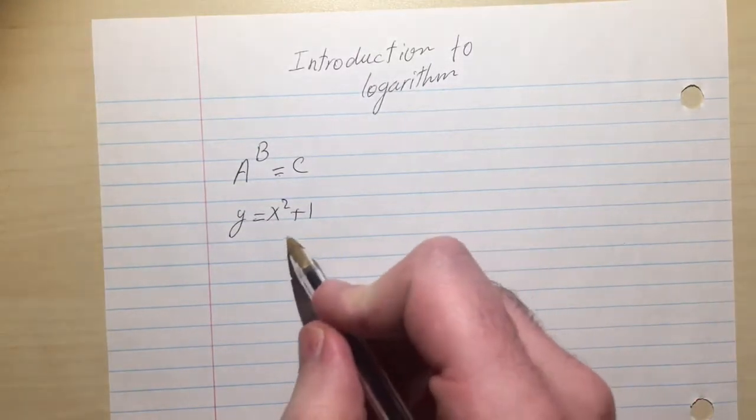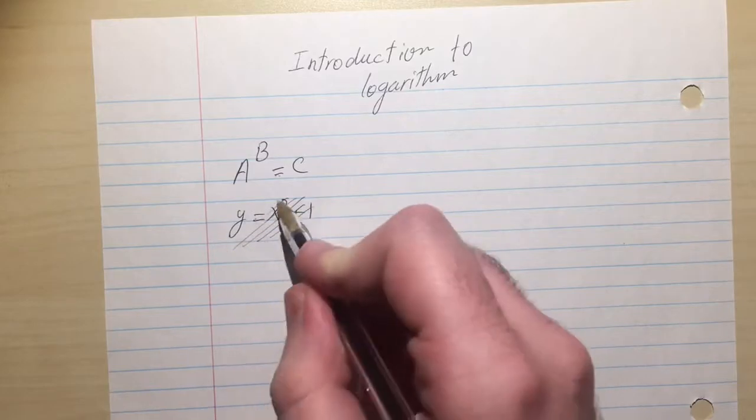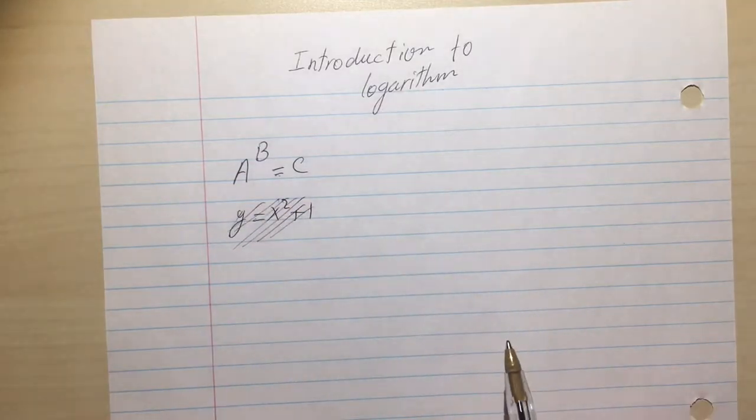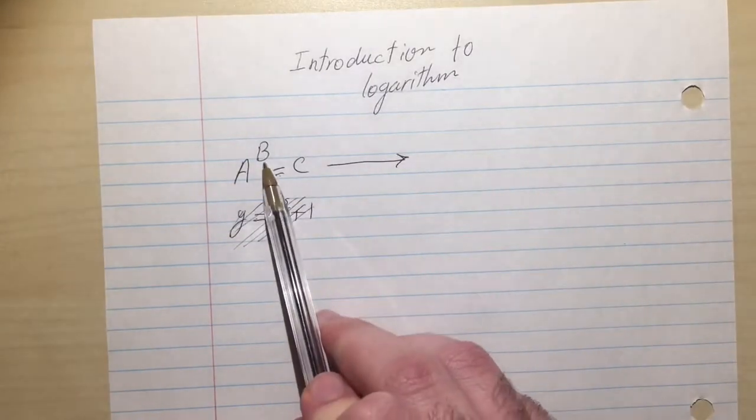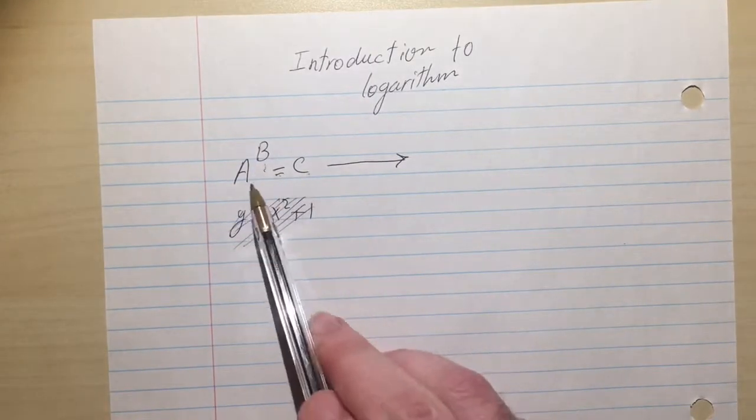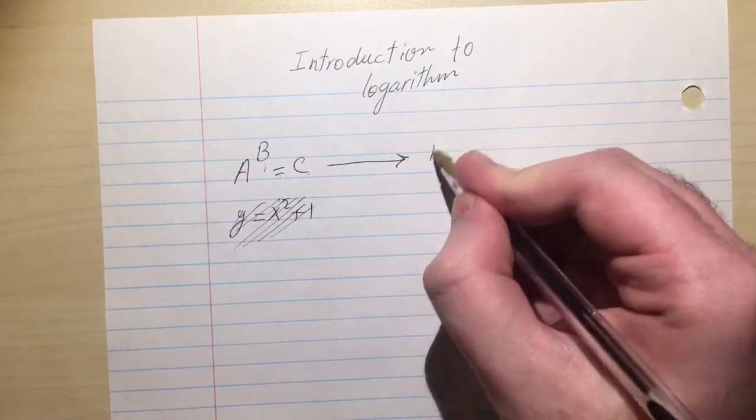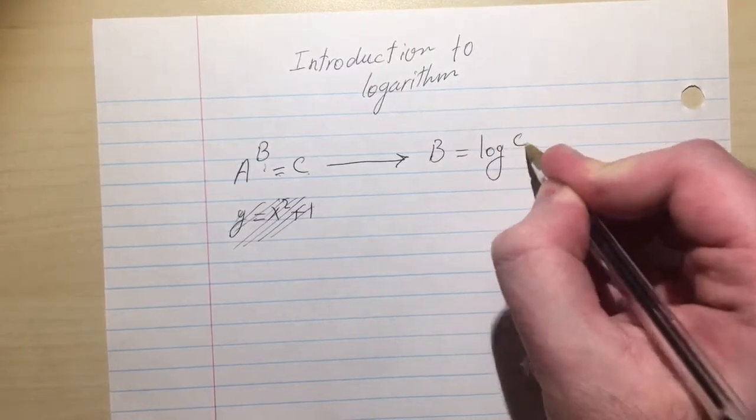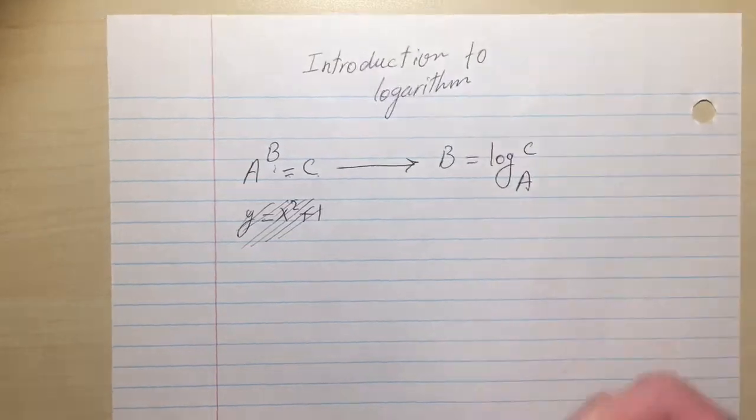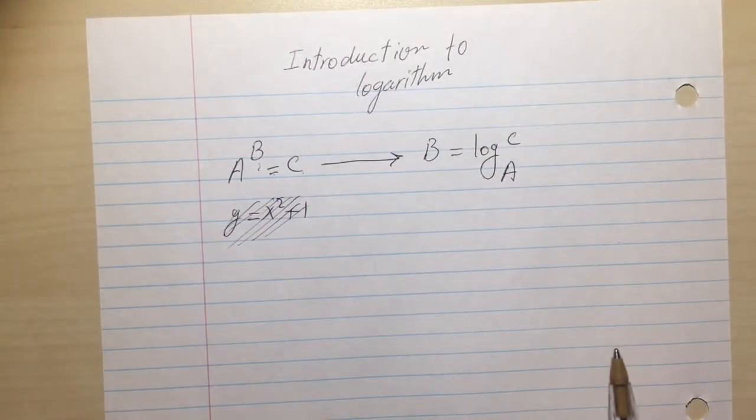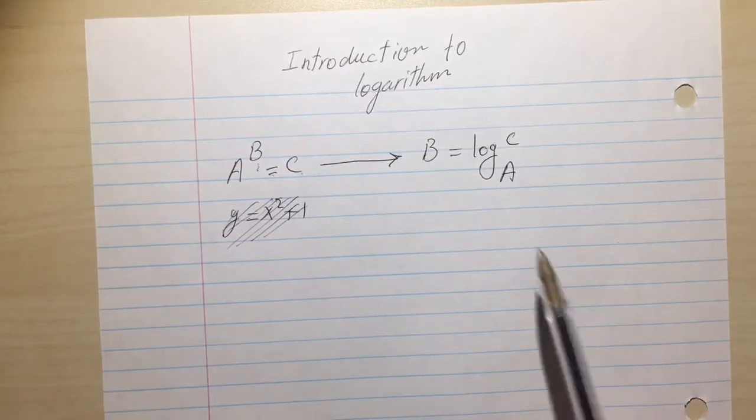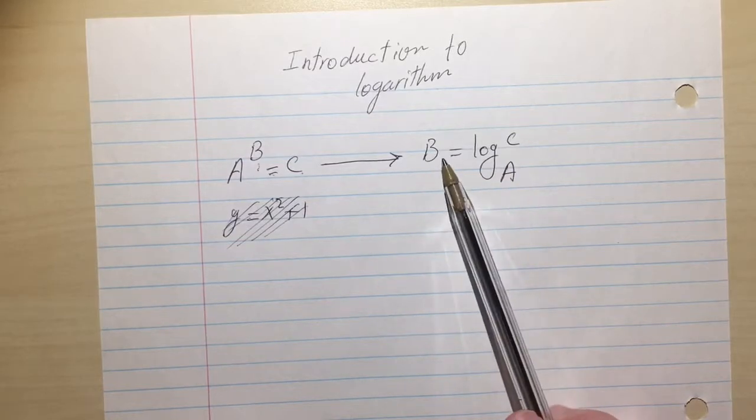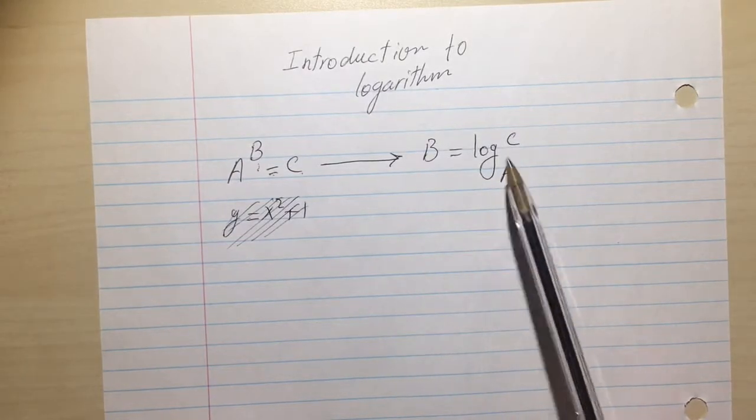The log writes B in the form of C and A. Log is B equals to log C base A. We say C base A, not C over A. And the way of reading a log is A to the B is C, simple as that.